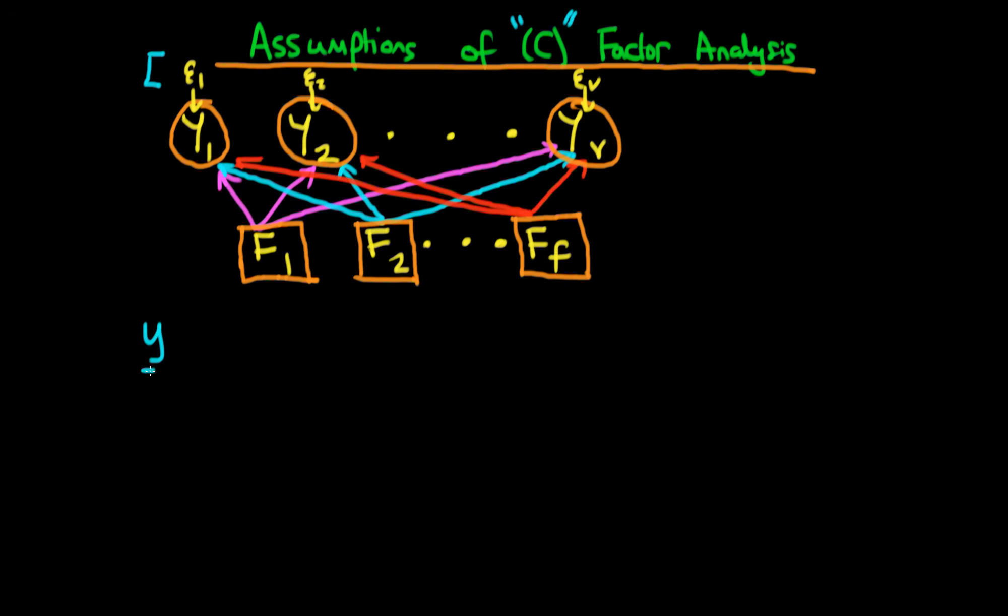And we can rewrite this entire system using our vector notation, which is just that Y is equal to capital lambda times eta plus epsilon. So just to be clear here, eta represents our vector of our unobserved factors, so that's the vector of F1 through to FF. And Y here represents our vector of our observed variables, so that's Y1 through to YV. Lambda here hence represents the weight of the different factors on each of the different observed variables, and epsilon here represents the specific unique variances.